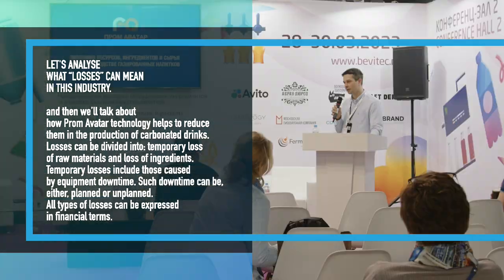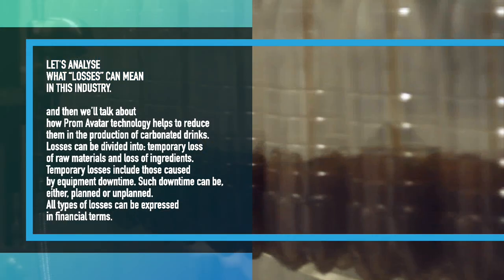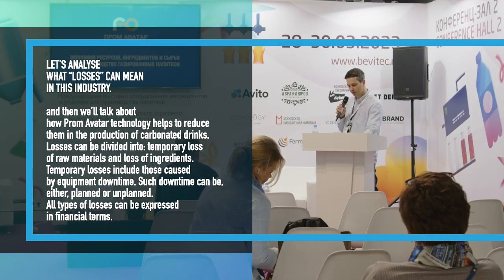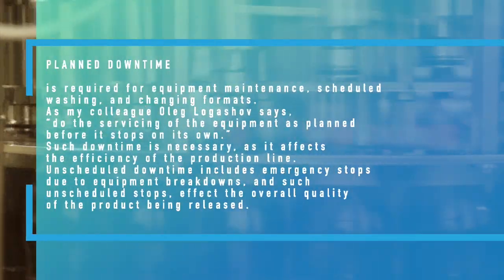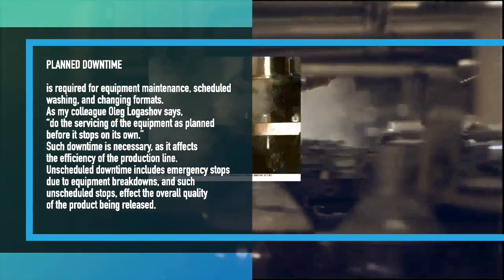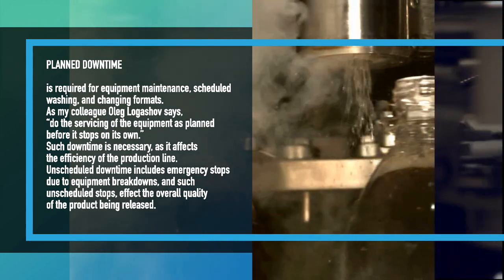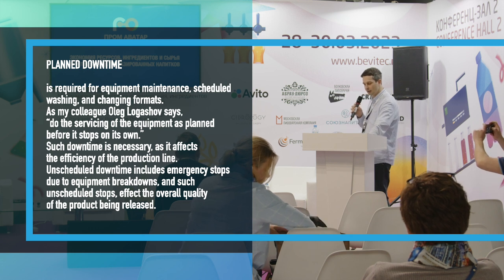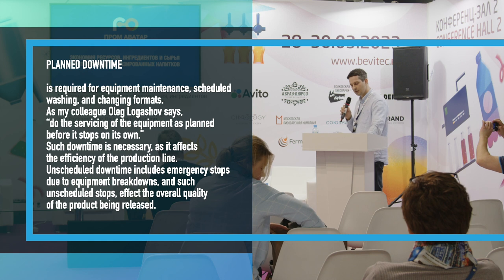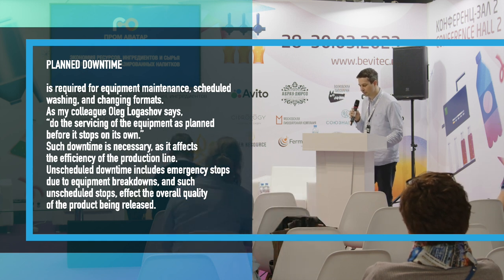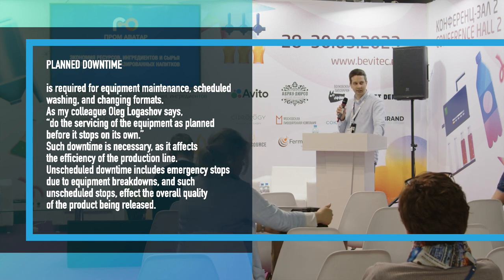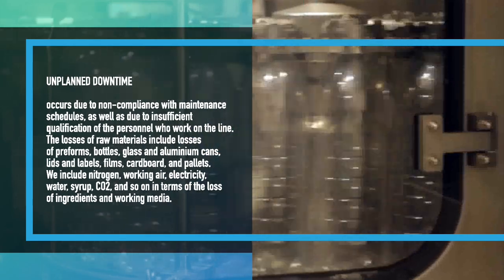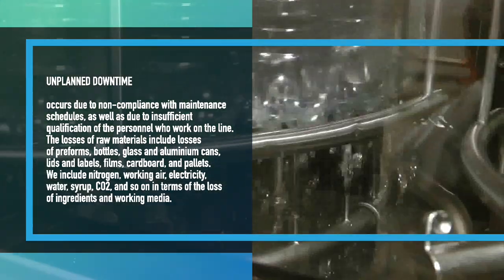Losses can be divided into temporary loss of raw materials and loss of ingredients. Temporary losses include those caused by equipment downtime, which can be either planned or unplanned. All types of losses can be expressed in financial terms. Planned downtime is required for equipment maintenance, scheduled washing and changing formats. As my colleague Oleg Logoshoff says, do the servicing of the equipment as planned before it stops on its own. Unscheduled downtime includes emergency stops due to equipment breakdowns, which affect the overall quality of the product being released. Unplanned downtime occurs due to non-compliance with maintenance schedules as well as insufficient qualification of personnel who work on the line.